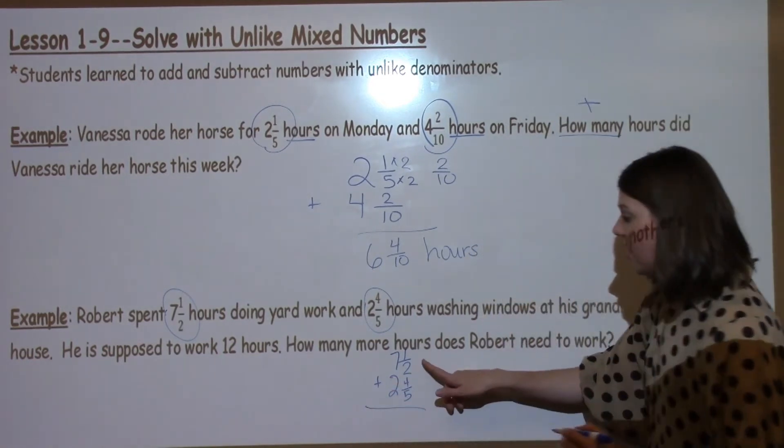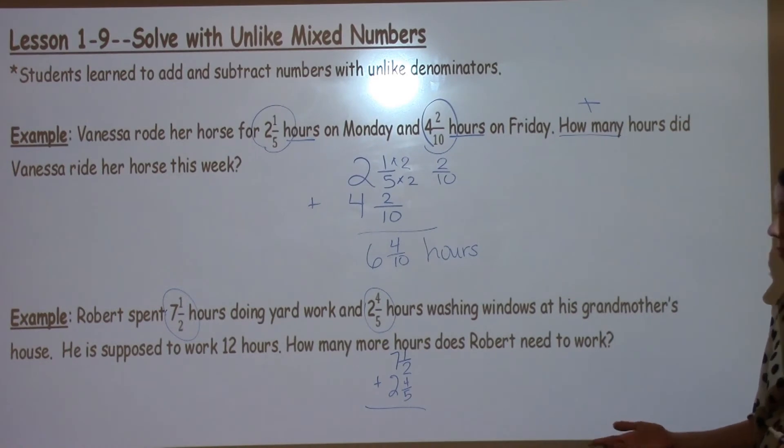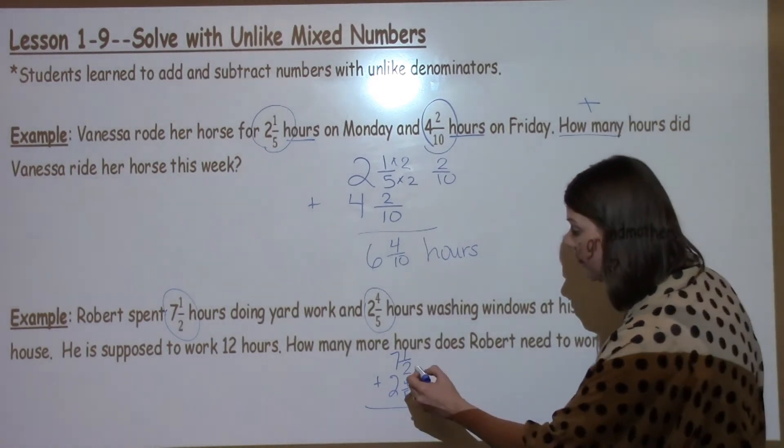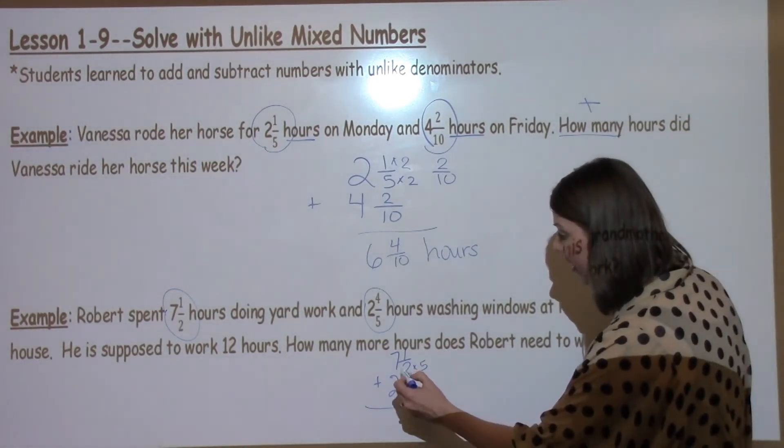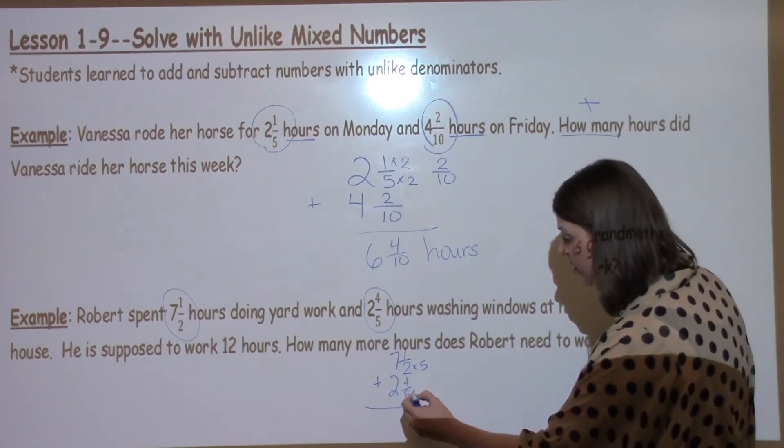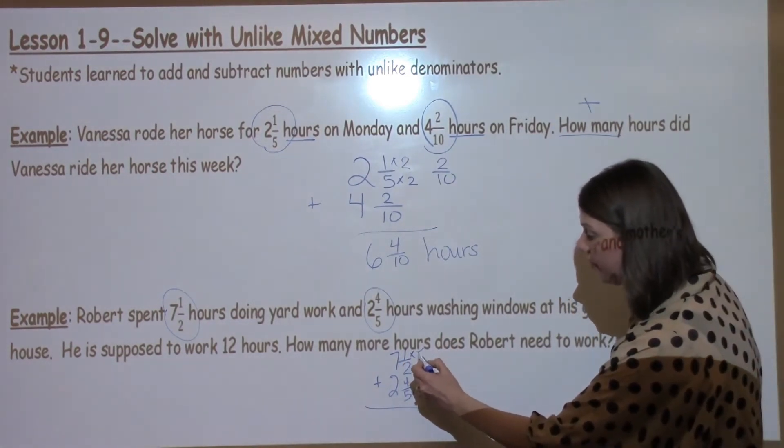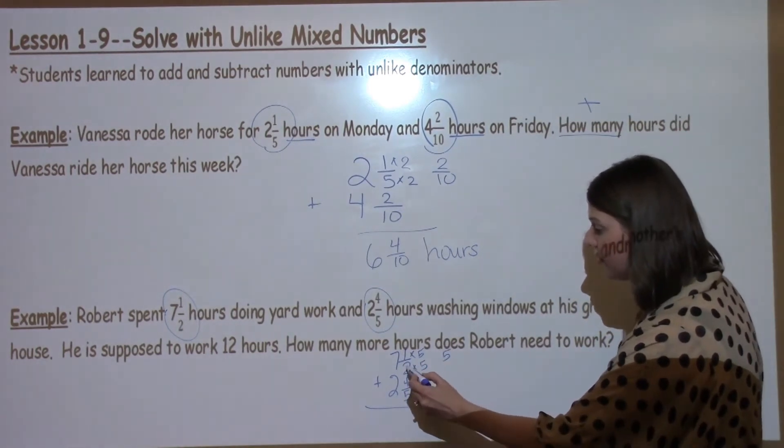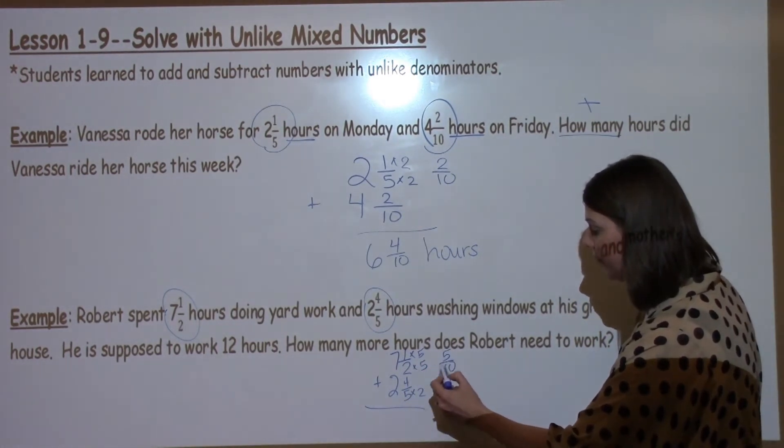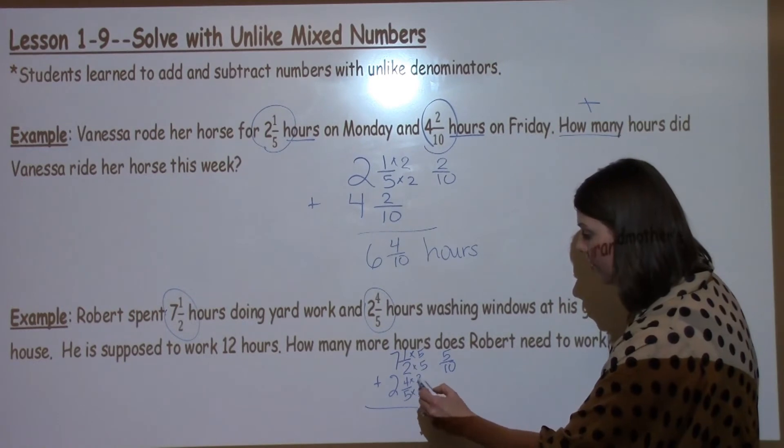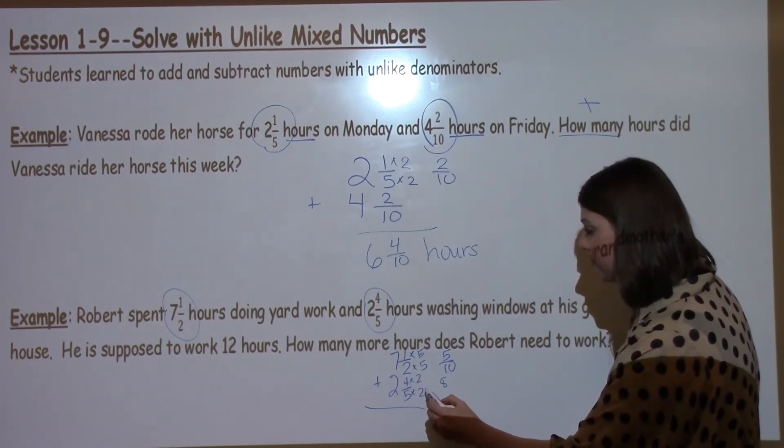As I can see, I do not have the same denominator. I need to make them the same. I'm going to use a strategy where I take them by the opposite denominator. I'm going to take 5 times 2 and 2 times 5. What I would do to the bottom, I have to do to the top. 1 times 5 is 5. 2 times 5 is 10. 4 times 2 is 8. 5 times 2 is 10.